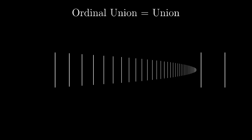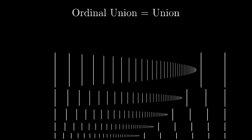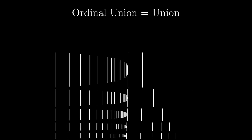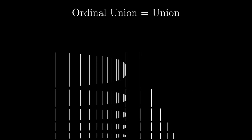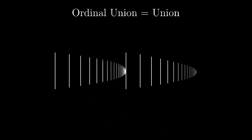With ordinal numbers introduced formally, many things become simpler. We don't have to say that the ordinal union is something like the union — since all the ordinals share their elements, it is simply just union, exactly the one guaranteed by the axiom of union.